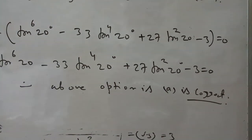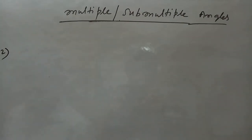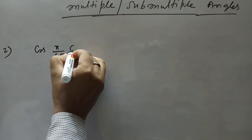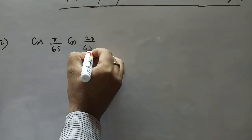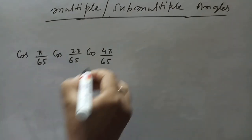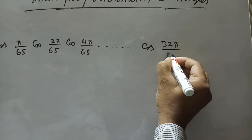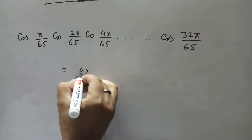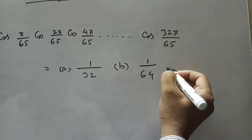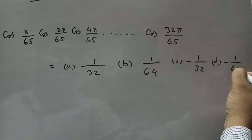Now we will show another type of sum. Problem 2: What is the value of cos(π/65) · cos(2π/65) · cos(4π/65) · · · cos(32π/65)? Option A is 1/32, option B is 1/64, option C is −1/32, option D is −1/64.